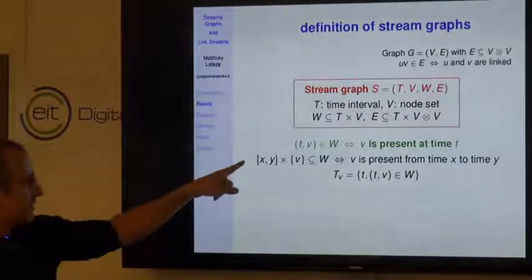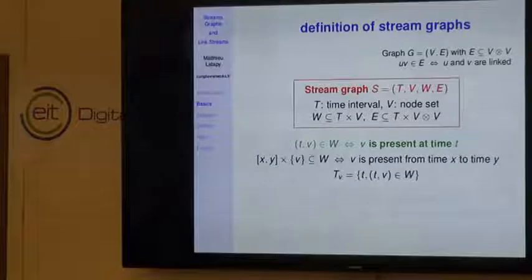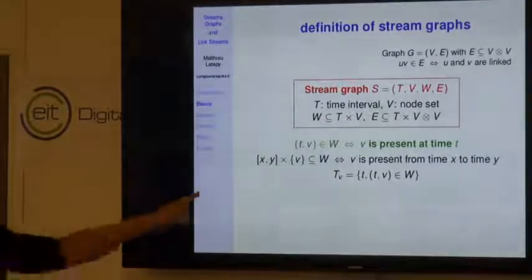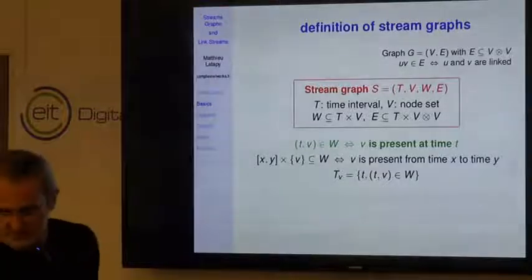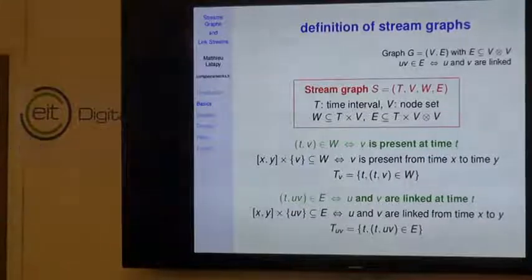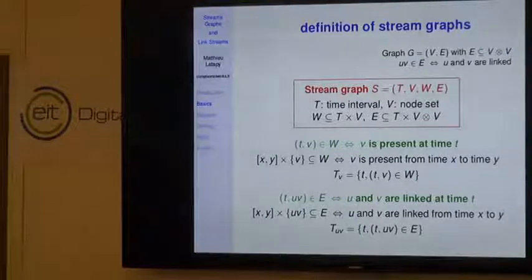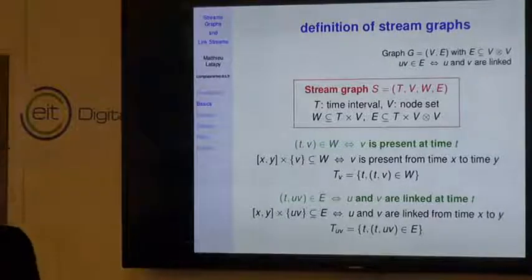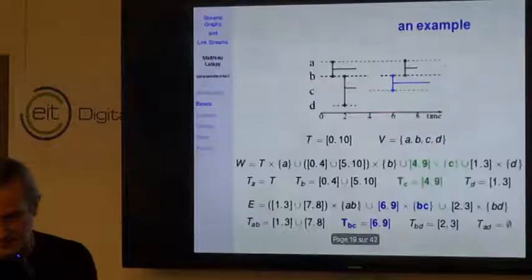When a time interval [x,y]×{v} is included in W, it means v is present from time x to time y. Capital T_v denotes the set of time instants at which v is present in the stream. The fourth set defining a stream graph is the set of links E, a subset of T×V×V. Similarly to W, (t,u,v) in E means u and v are linked at time t. Capital T_{u,v} is the set of time instants at which u and v are linked together.